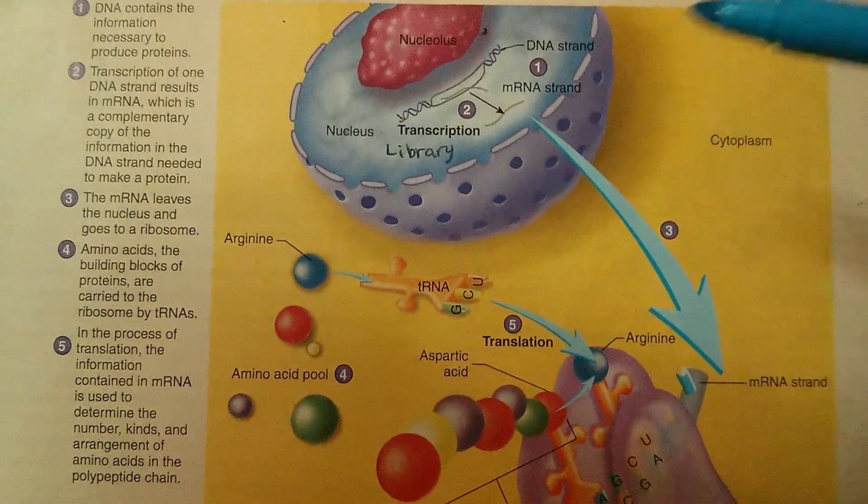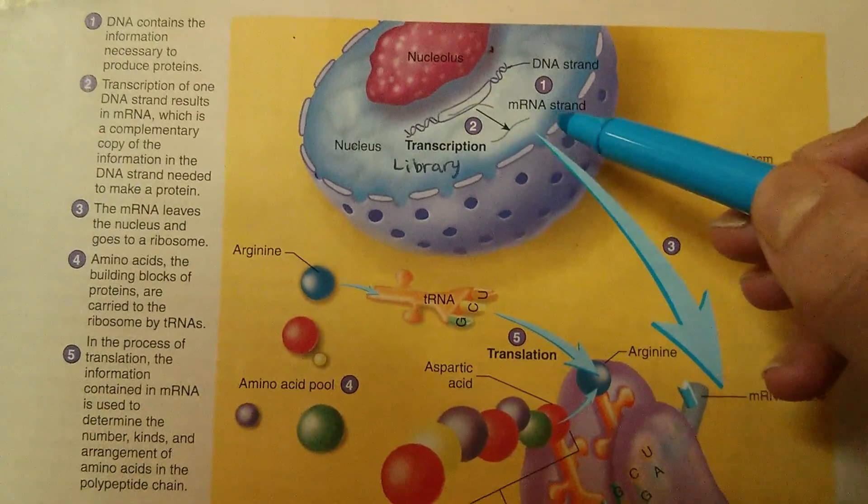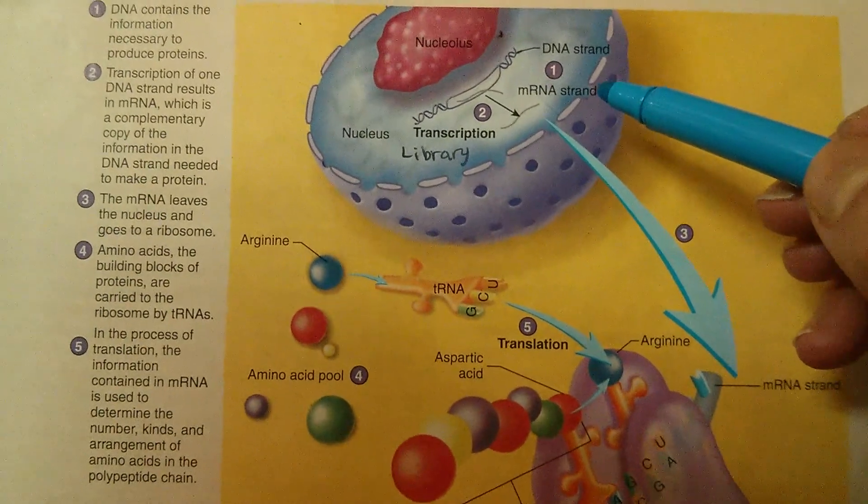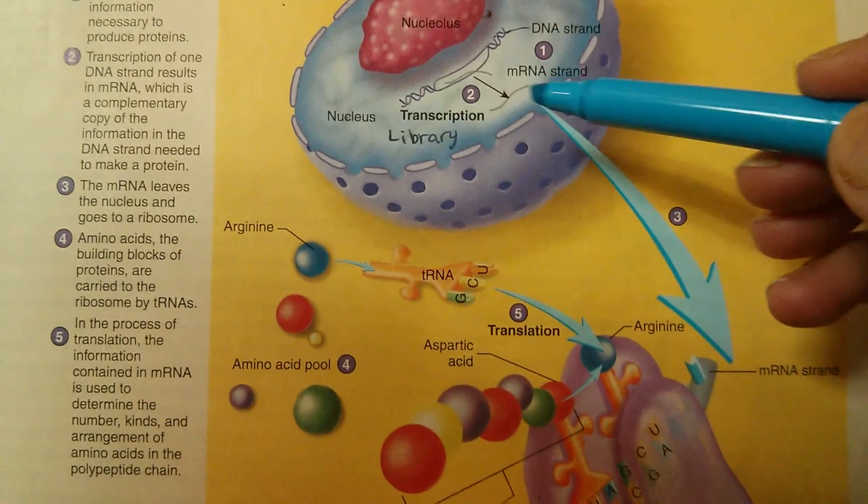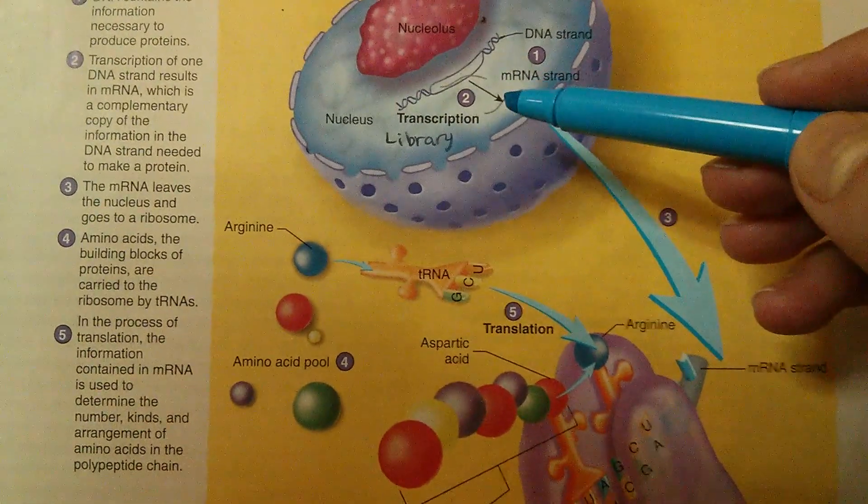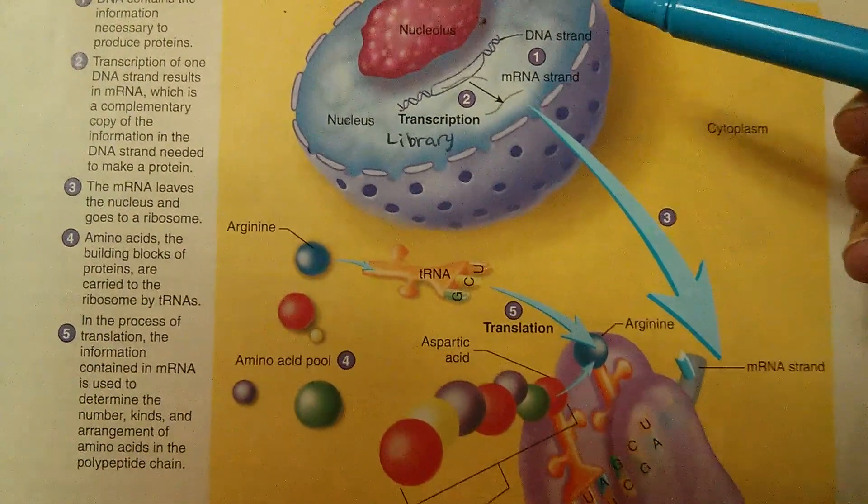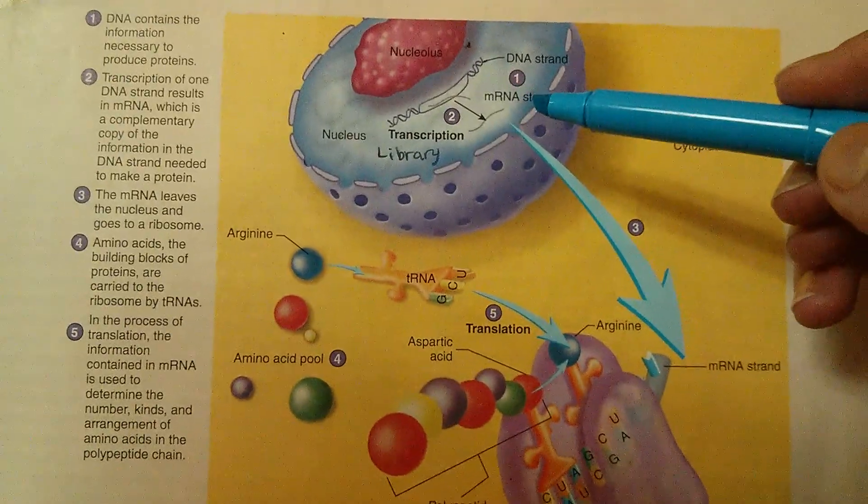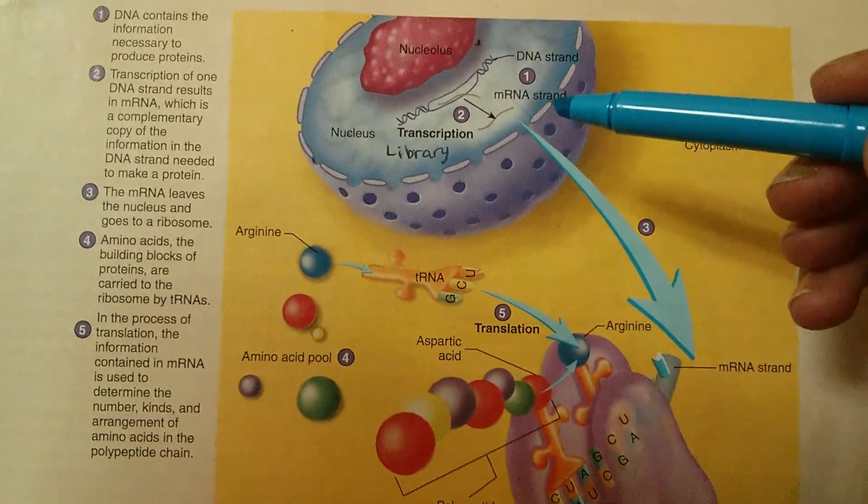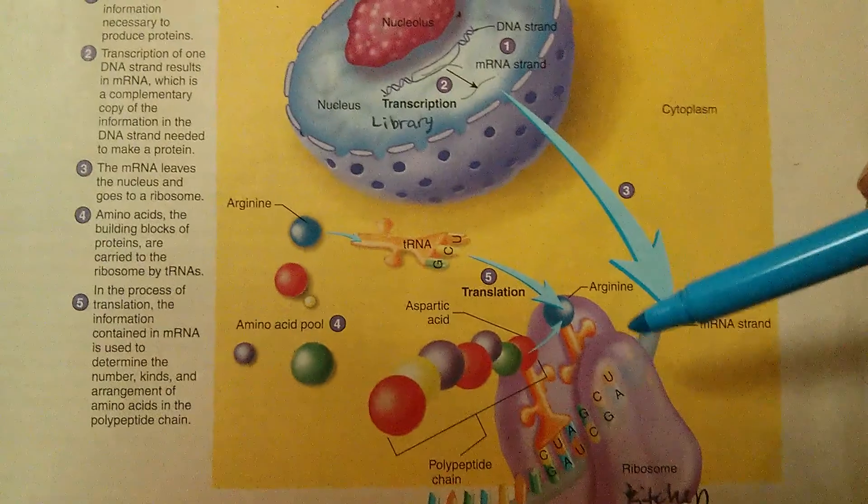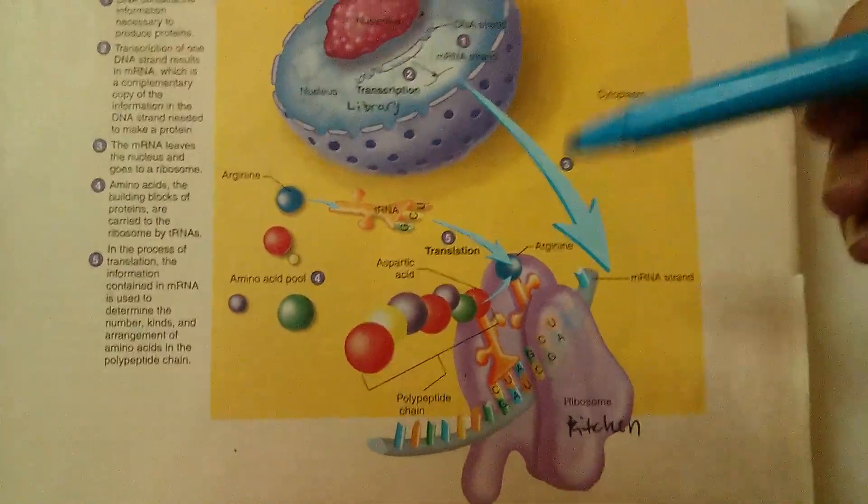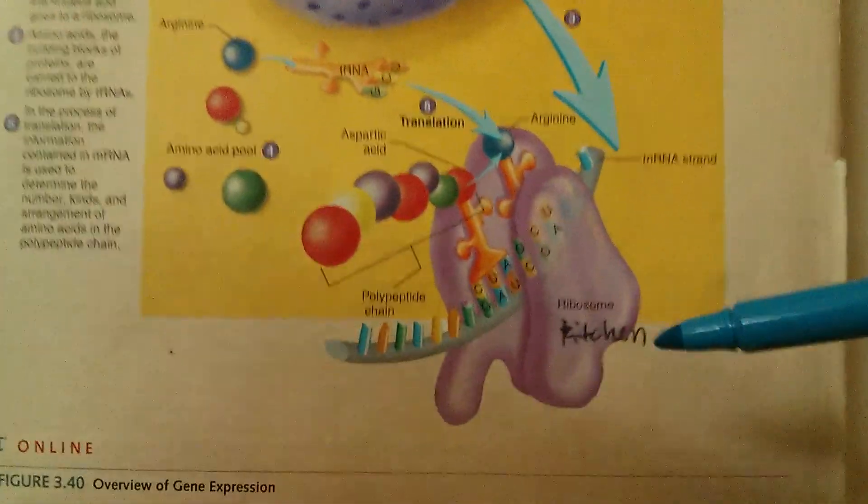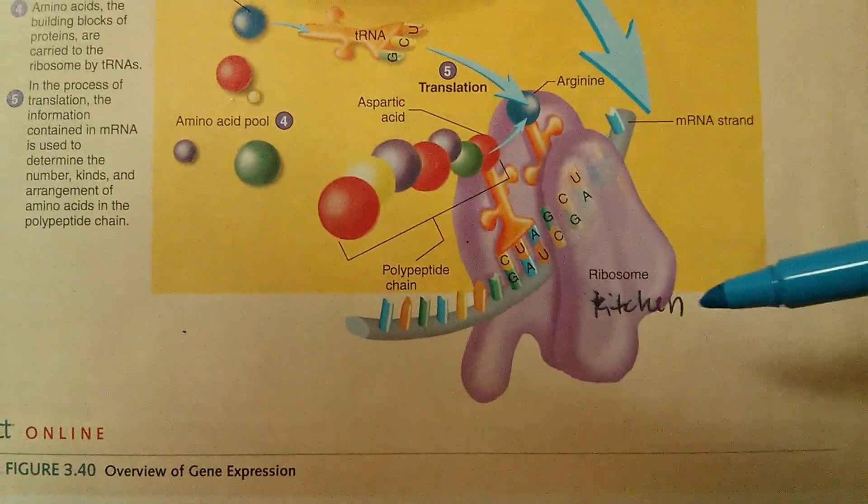Now, the copy itself is called the mRNA strand. So, don't get that confused. The process of making the copy is called the transcription, but the copy itself is called the mRNA, which stands for messenger RNA. It's called messenger because it's taking that information on the recipe and delivering it to the ribosome. This purple structure here is the ribosome. Now, in our illustration, the ribosome here is going to be the kitchen.